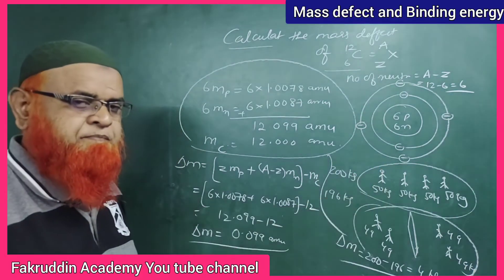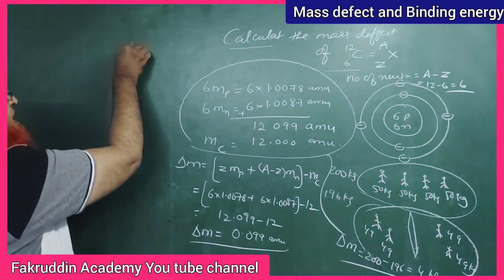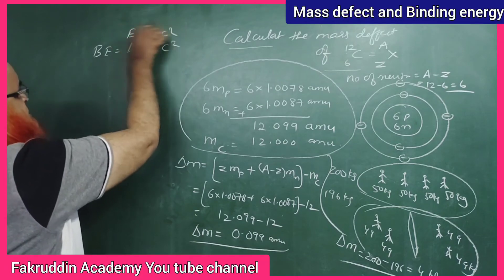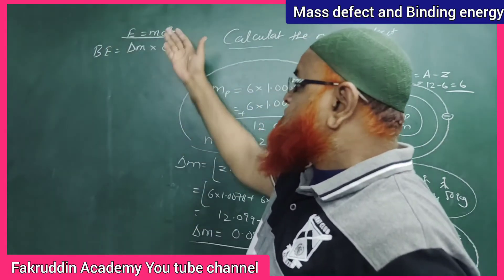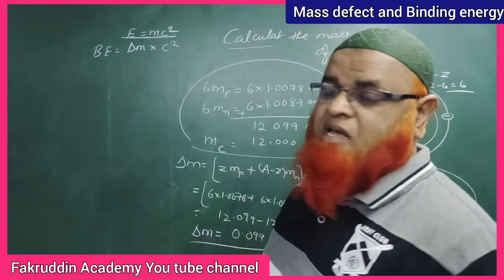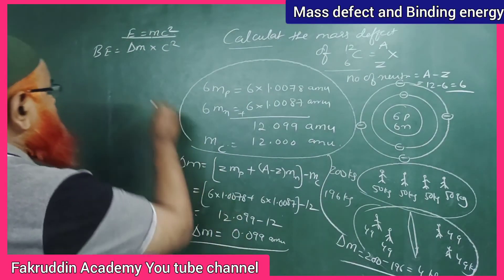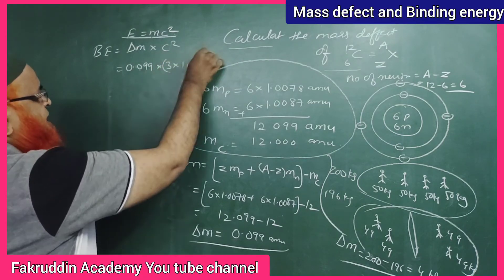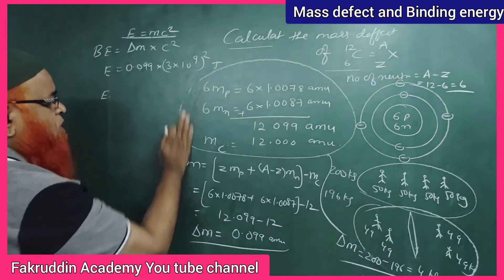To find the binding energy, you should know that binding energy = mass defect × c². This comes from Einstein's mass-energy equivalence E = mc², modified for nuclear physics. So binding energy = 0.099 × (3 × 10⁸)². The answer is obtained in joules. If you want the answer in million electron volts, you proceed with unit conversion.